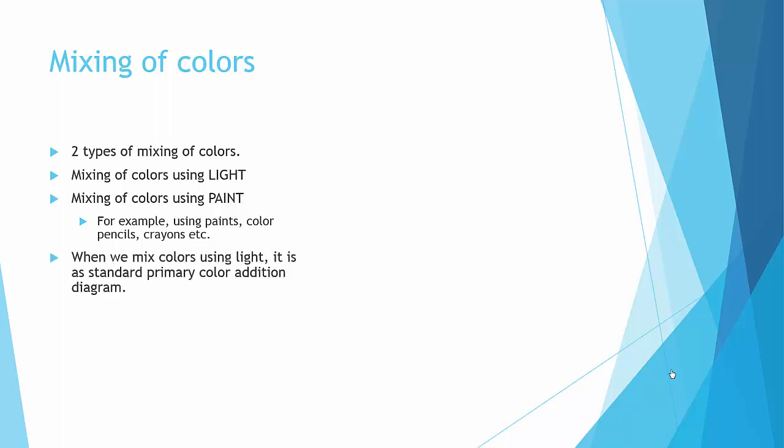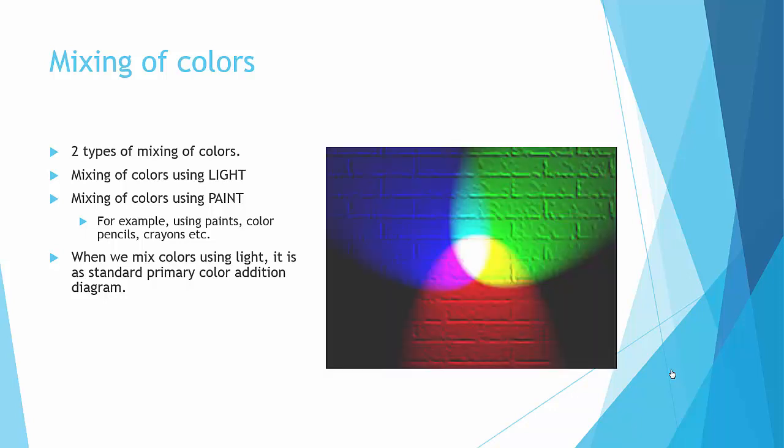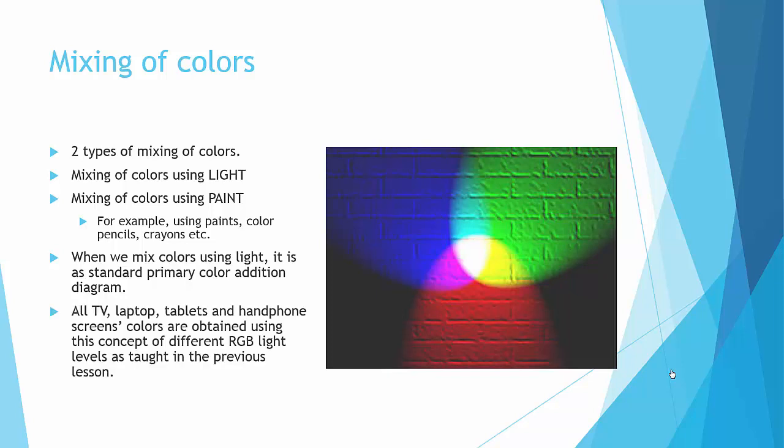When we mix colors using light, it's the standard primary color addition diagram which again looks like this. So when you mix colors using light by shining lights on it, you do get blue, green, and red and cyan, magenta, yellow, and white right at the center when you mix all three colors. All TV, laptops, and tablet handphone screens colors are obtained using this concept of different RGB light levels as taught in the previous lesson.